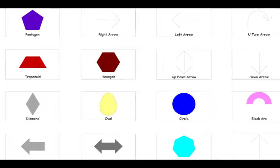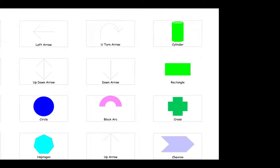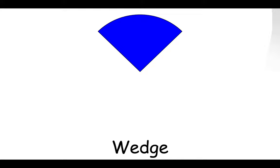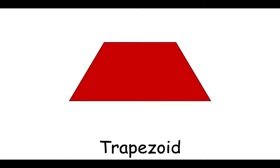Shapes. Circle. Square. Triangle. Rectangle. Pie. Semicircle. Wedge. Ellipse. Oval.